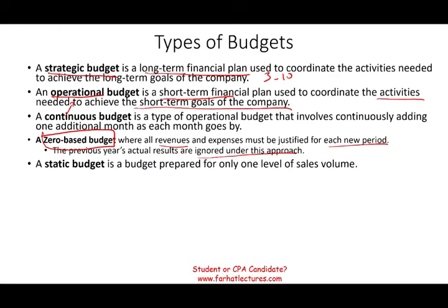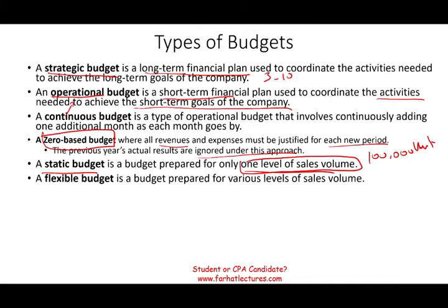Another type of budget is the static budget, which is prepared for one level of sales activity. For example, you say I'm going to sell 100,000 units — what does my budget look like at that one level? It's fixed; it doesn't change. Versus a flexible budget, which is prepared for various levels of sales volume — for instance, budgets for 90,000, 100,000, and 110,000 units. These are called flexible budgets because they flex: if volume changes, you can see what happens.